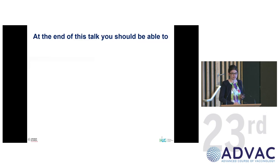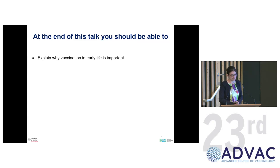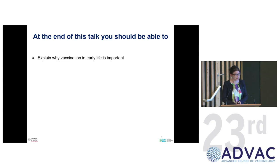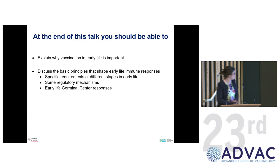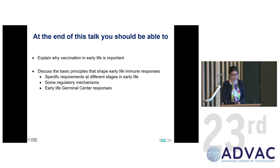If you look at the class objectives for this 25 minutes, at the end you should be able to explain why vaccination in early life is important — that's going to be an easy one. You should also be able to discuss the basic principles that shape early life immune responses, cite some of the specific requirements at different stages in early life, some regulatory mechanisms, and the early life germinal center responses.